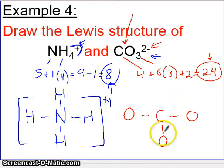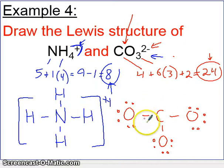We have 1, 2, 3, 4, 5, 6 so far. 7, 8, 9, 10, 11, 12, 13, 14, 15, 16, 17, 18, 19, 20, 21, 22, 23, 24. We've exhausted all our electrons, but if you take a look, the carbon in the middle only has 6: 1, 2, 3, 4, 5, 6.